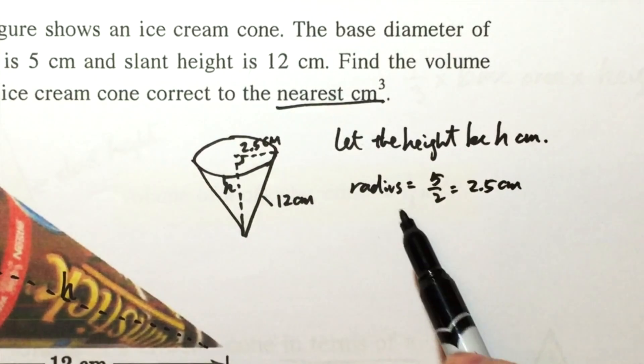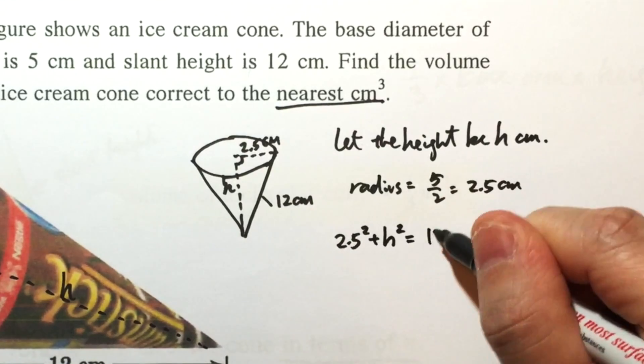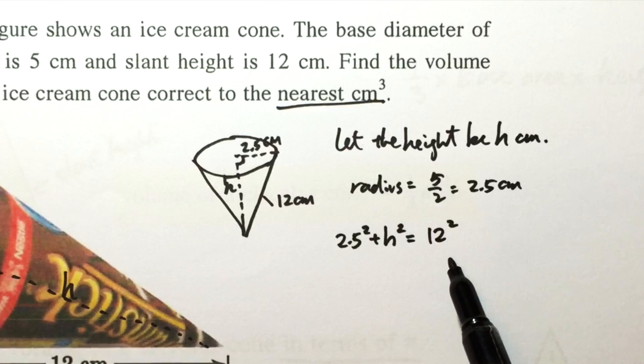First of all, write down the radius is 2.5 cm. Therefore, 2.5² + h² = 12².